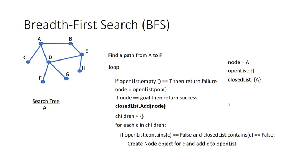Now it's time to expand the node. We apply all actions to that node to generate a list of new nodes, which are considered its children. In our graph, we're at node A, and the nodes reachable from A, added in clockwise order starting from 12 o'clock, are B, D, and C. So our array of children nodes is B, D, C.